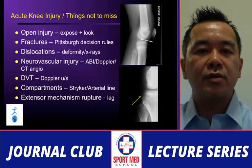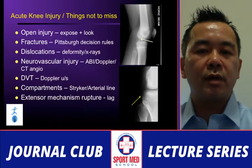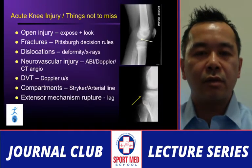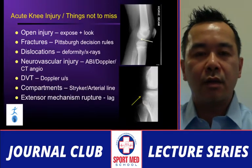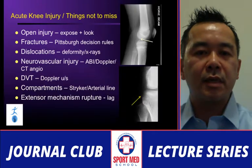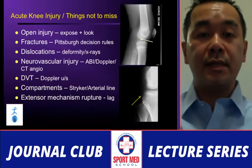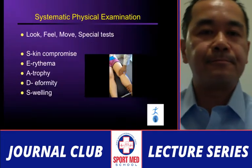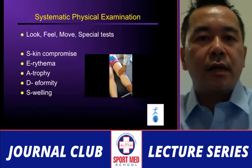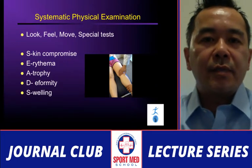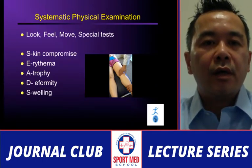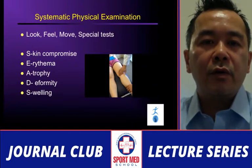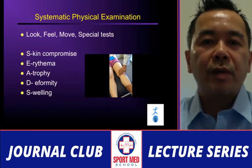Look for extensor mechanism rupture. The extensor lag test will identify quadricep tendon rupture, patellar fracture, or patellar tendon rupture. The physical examination is systematic — look at the skin, deformity, feel, move, and do special testing. I have a specific order to my exam; as long as you don't miss any step, you can use any mnemonic you want.